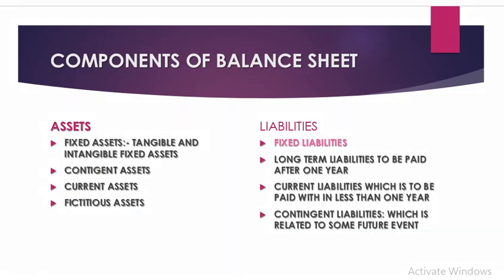The balance sheet has two components: assets and liabilities. Assets are what is owned by the organization. These could be fixed assets — which can be tangible, intangible, or contingent — current assets, or fictitious assets. Liabilities means what we owe to others. These could be long-term liabilities, paid after one year; current liabilities, paid within less than one year; or contingent liabilities, related to some future event that may or may not happen.